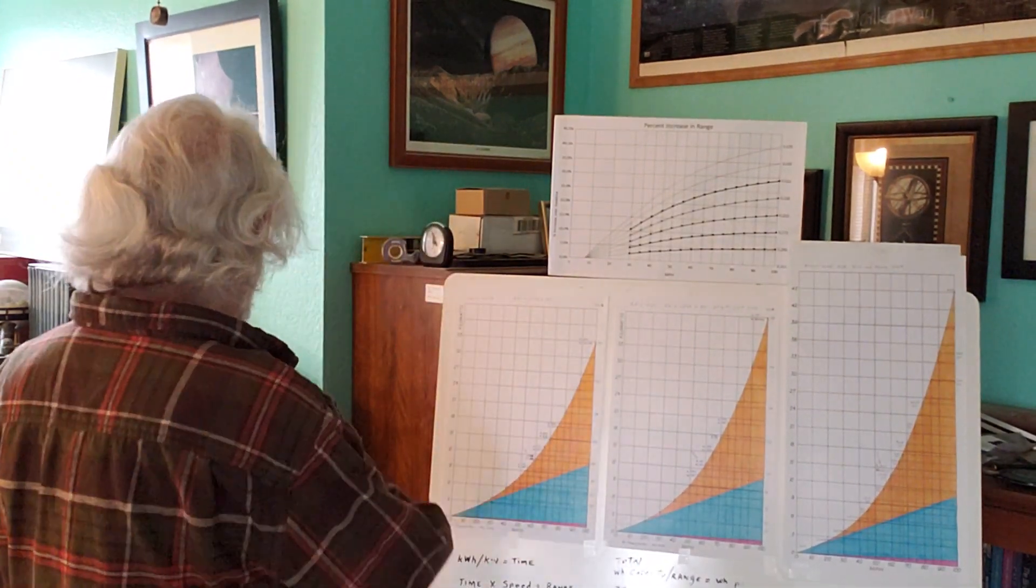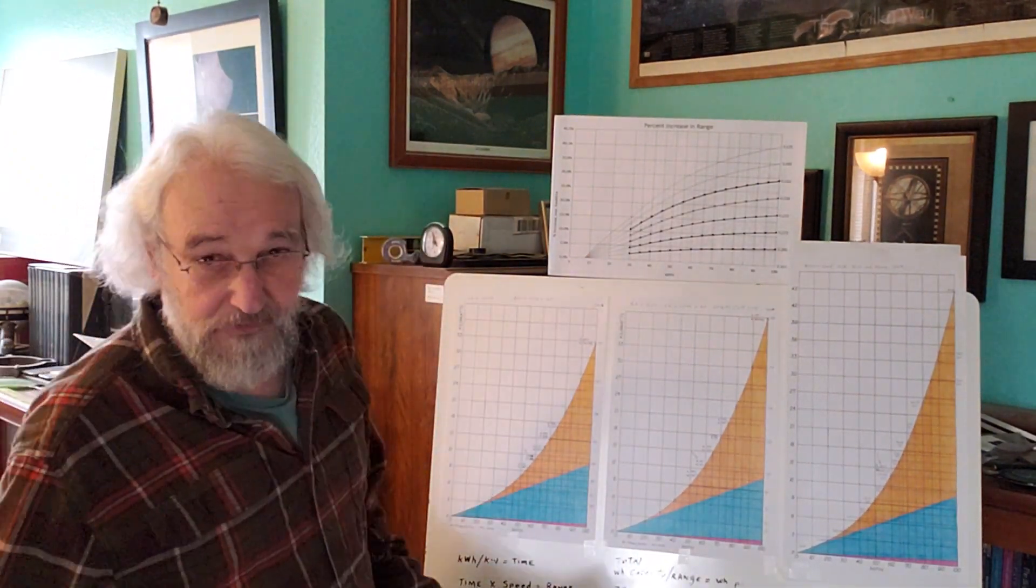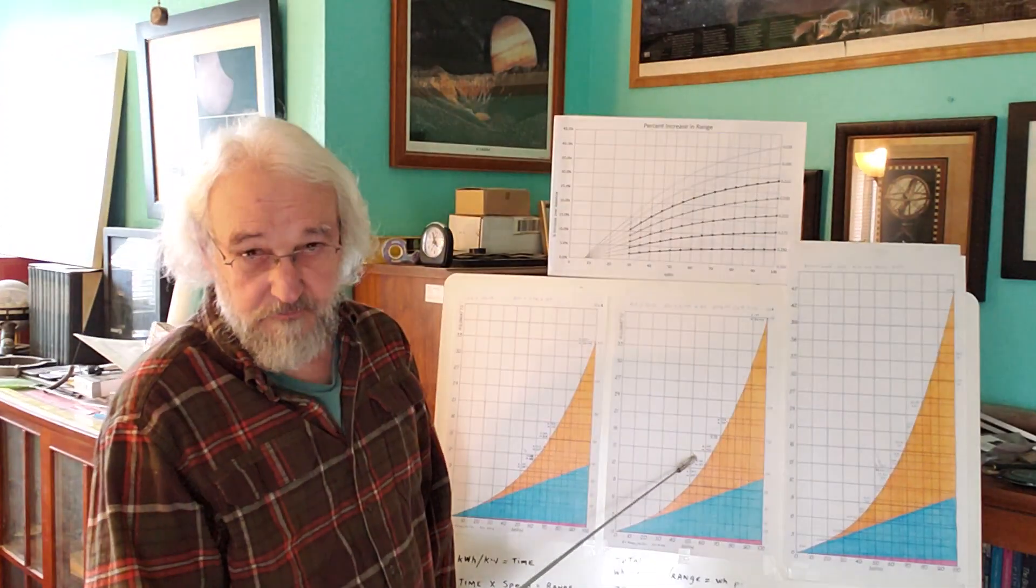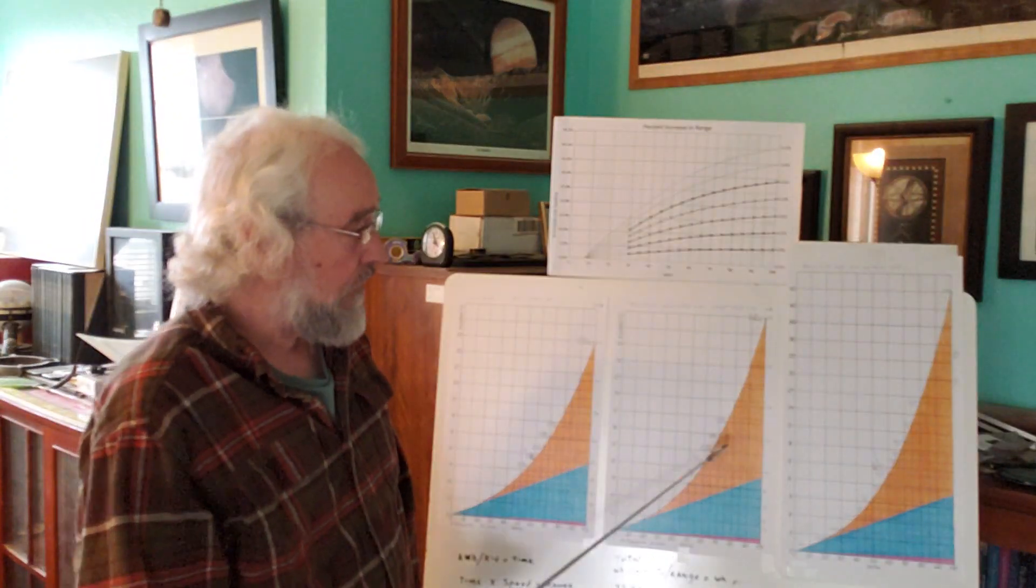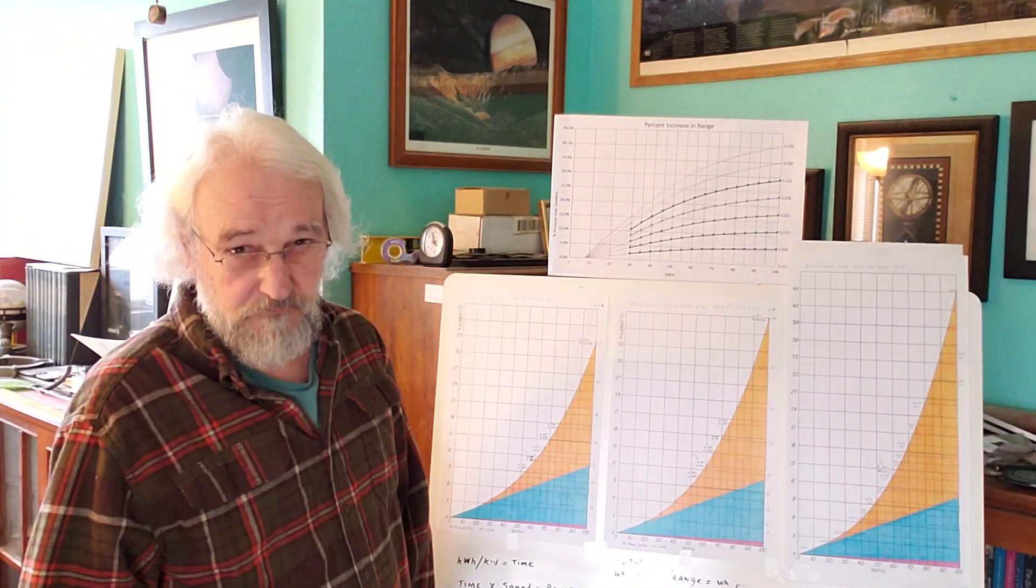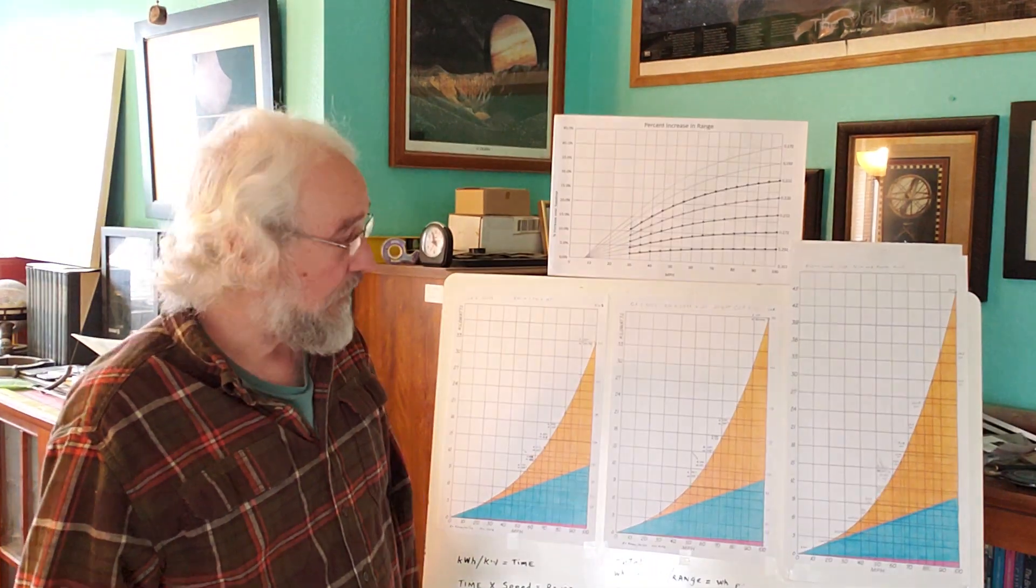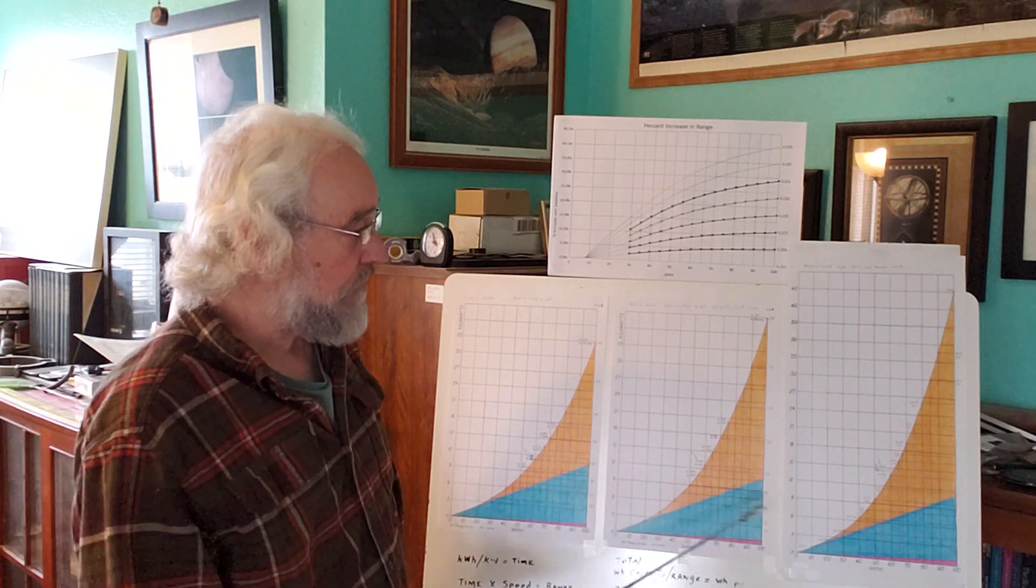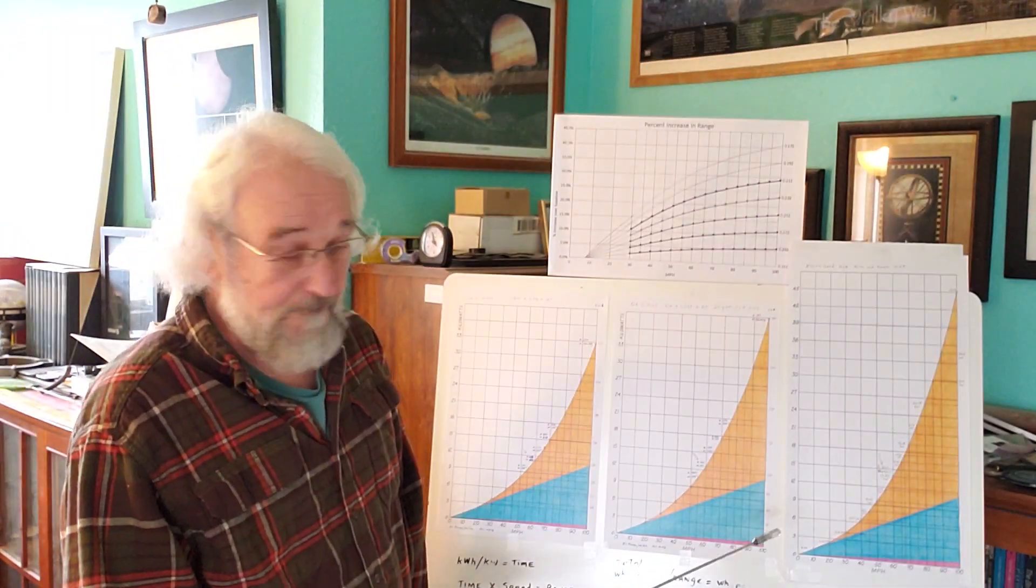Right here, we have three graphs. Okay. And the middle one is a Tesla Model 3, which has a coefficient of drag of 0.23. The one on the far right is equivalent of a Nissan Leaf. But all of these platforms are considered to be Tesla Model 3s as far as frontal area and drivetrain and so forth.